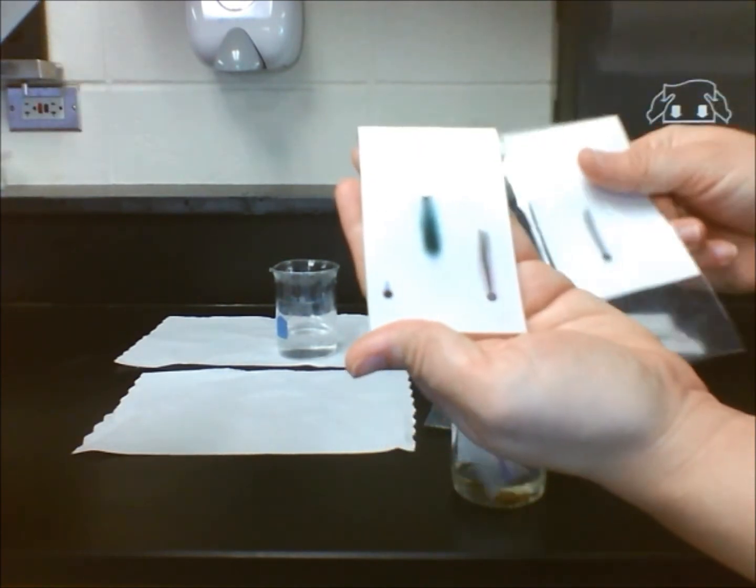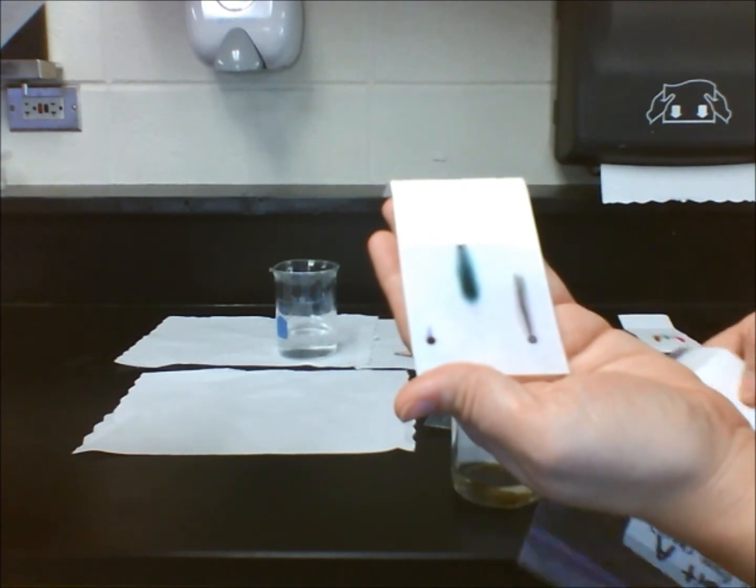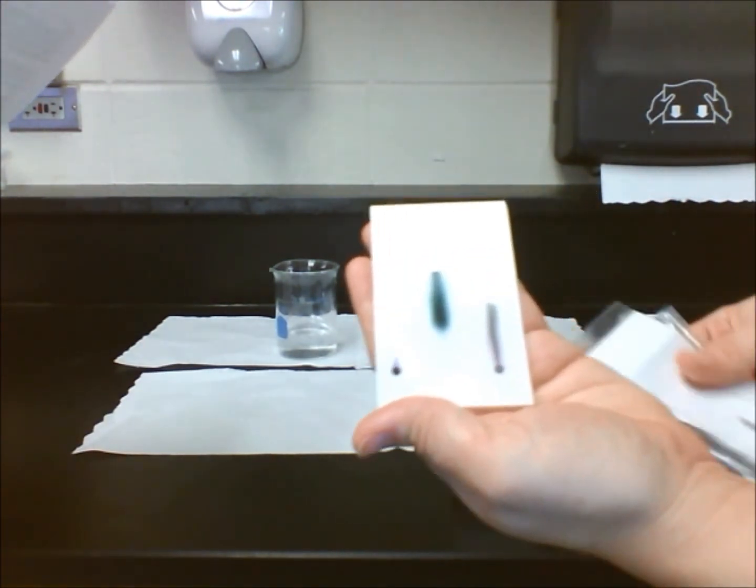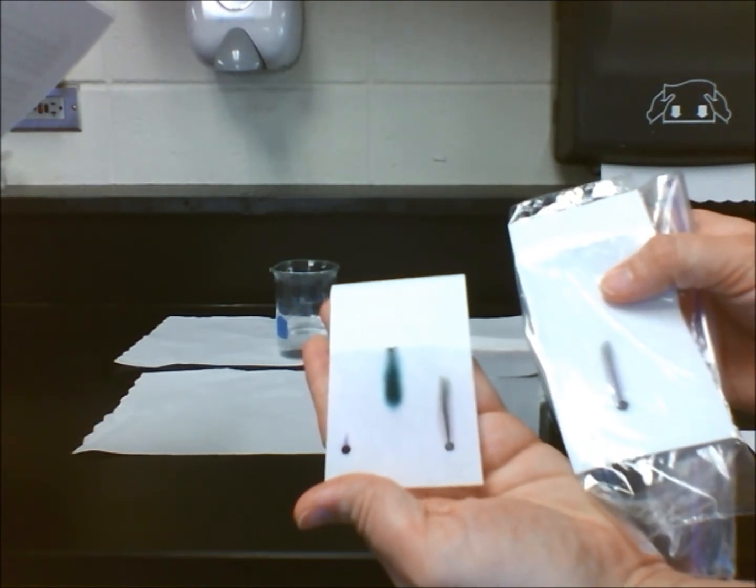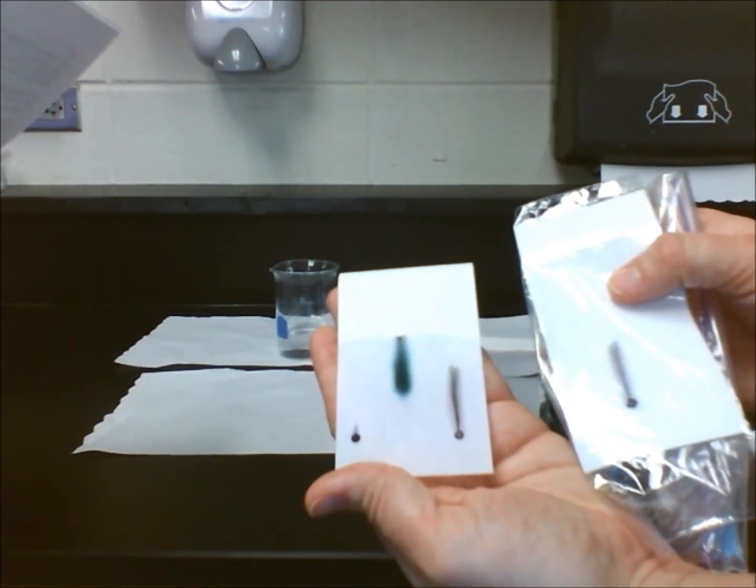When we compare Exhibit A to our test results, we can confidently conclude that the person who wrote the check is the bank teller. Her pen's chromatogram is almost identical to Exhibit A, with similar color solutes and the same dissolving pattern.